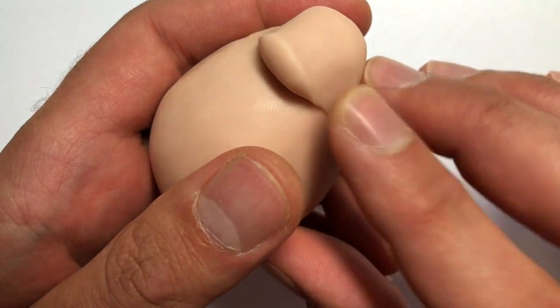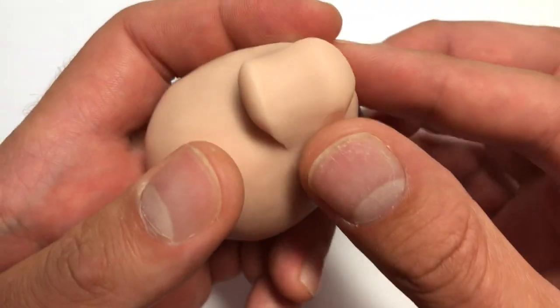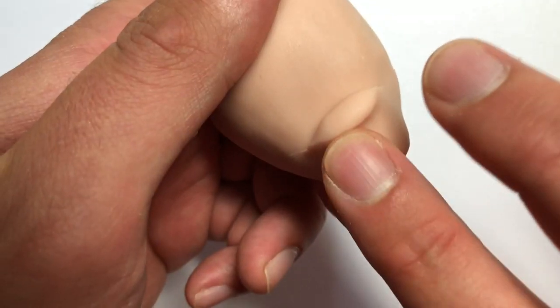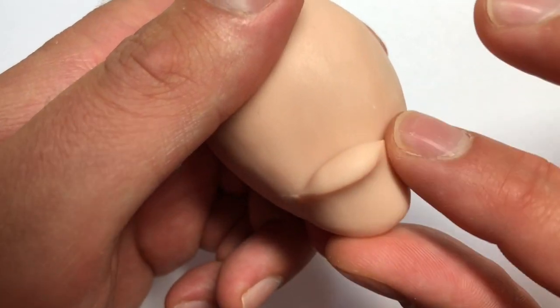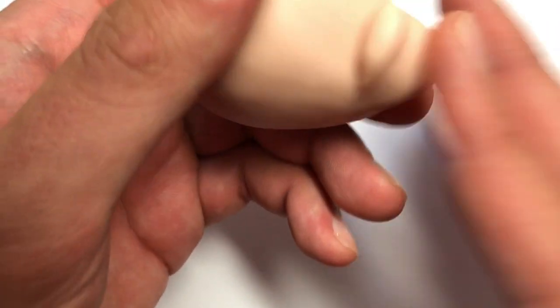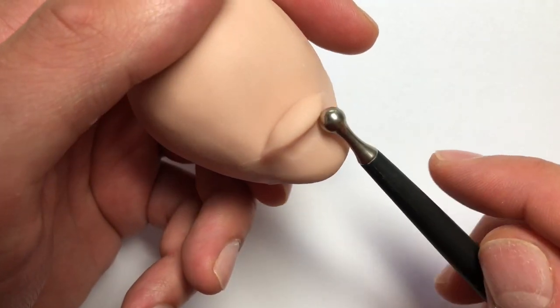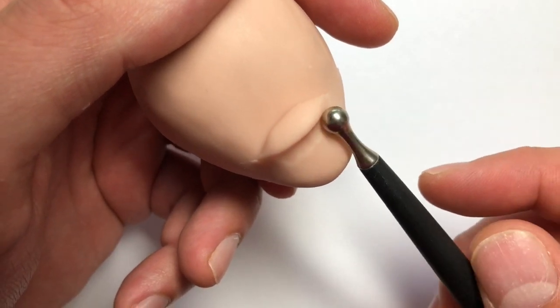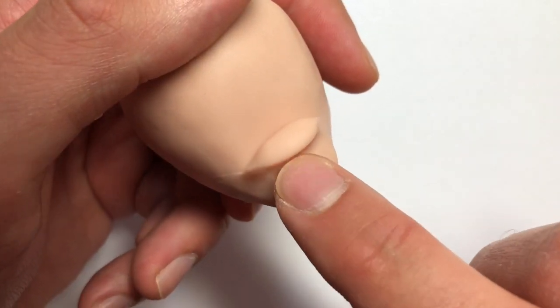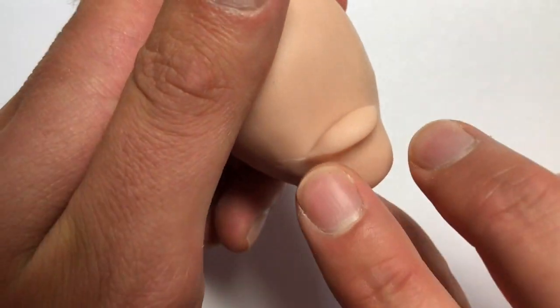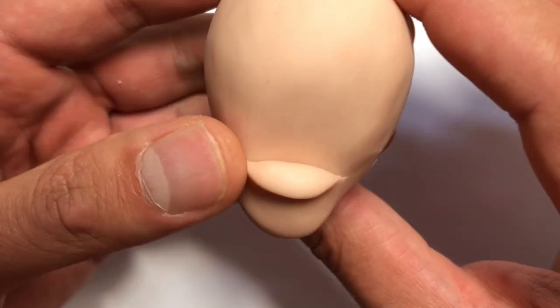I'm blending the chin in here and then shaping the bottom lip a little bit more to shape the chin so that it sticks out just a little bit. Then I'm going to take my ball stylus here to increase that indent and make sure everything is looking good.